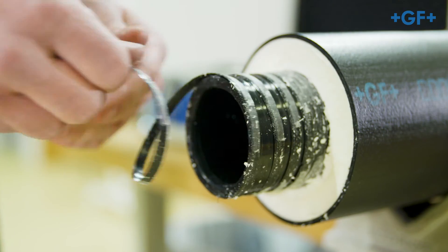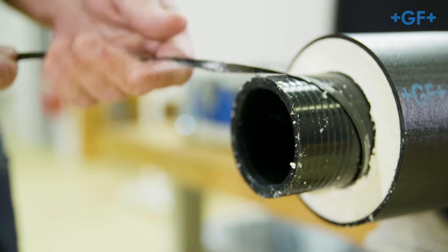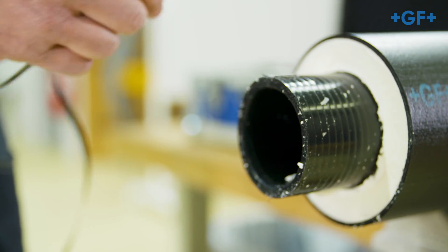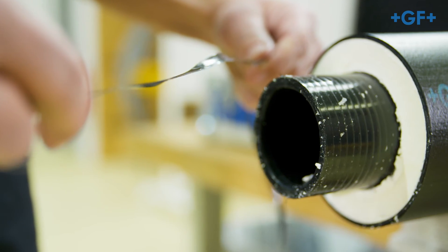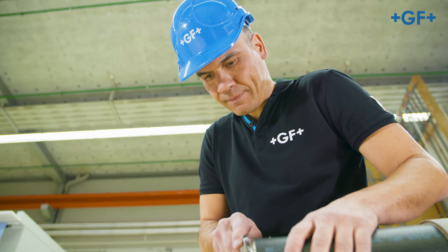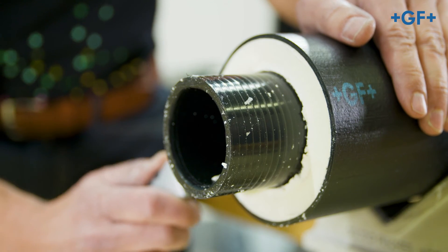Check that the inner pipe is peeled uniformly and completely and that the thickness of the chip is between 0.2 and 0.4 mm. Cut away the unevenly broken insulation face squarely without damaging the inner pipe.